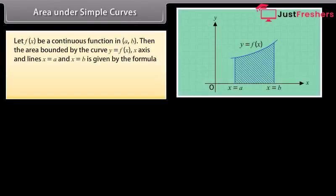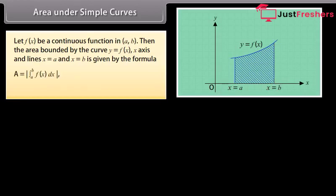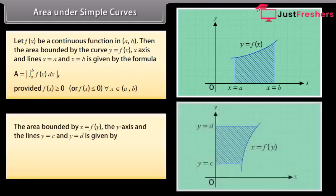Let f(x) be a continuous function in [A, B]. Then the area bounded by the curve y = f(x), the x-axis, and the lines x = a and x = b is given by the formula: A = |∫ from A to B of f(x) dx|, provided f(x) ≥ 0 or f(x) ≤ 0 for each x in [A, B]. The area bounded by x = f(y) follows similarly.